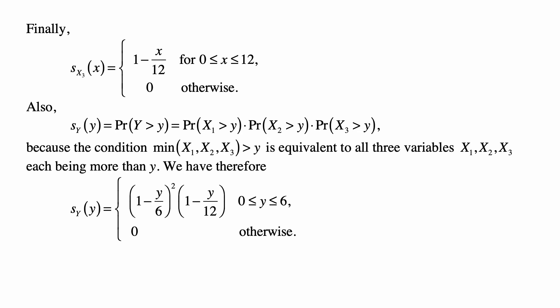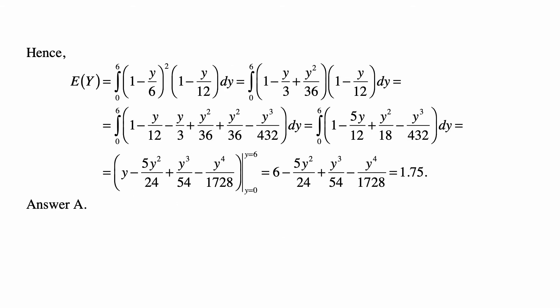Now, you may wonder what happens for those values between 6 and 12 for which the s sub X3 of x is positive. Well, it's positive, but it's multiplied by 0, so it's 0. And that's equal to y minus 5y squared over 24 plus y cubed over 54 minus y to the fourth over 1728 evaluated from 0 to 6.